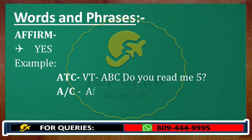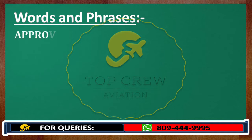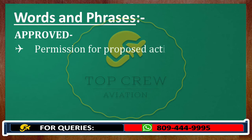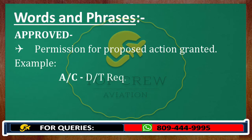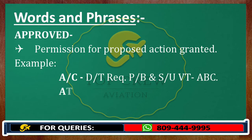Next is Approved, which means permission for proposed action granted. For example, Delhi Tower, request pushback and startup. Victor Tango Alpha Bravo Charlie, pushback and startup approved. Delhi Tower. This is how we use Approved.